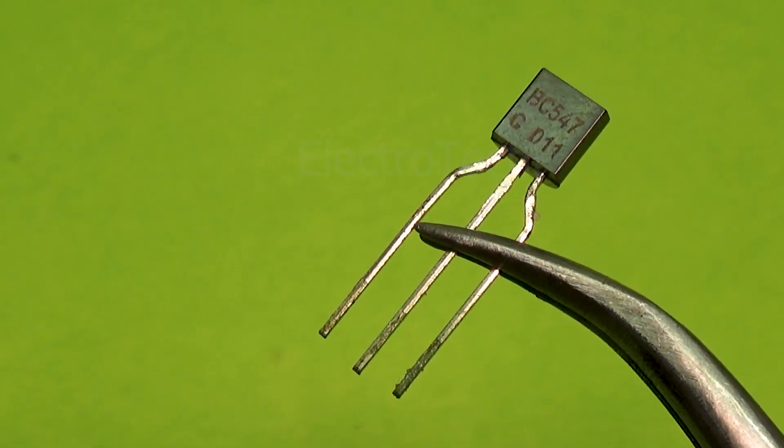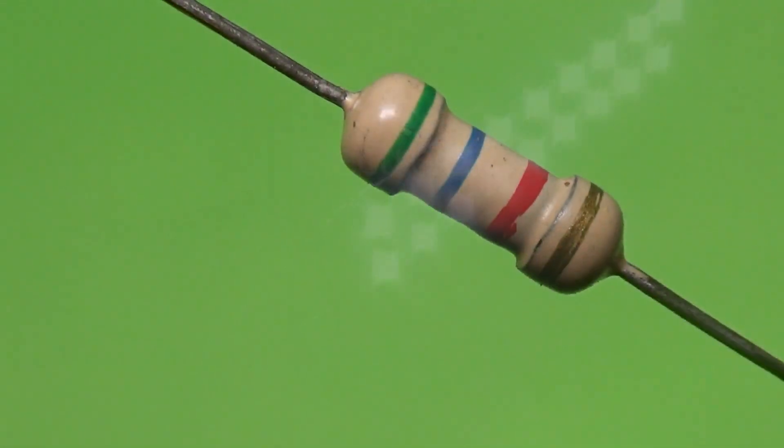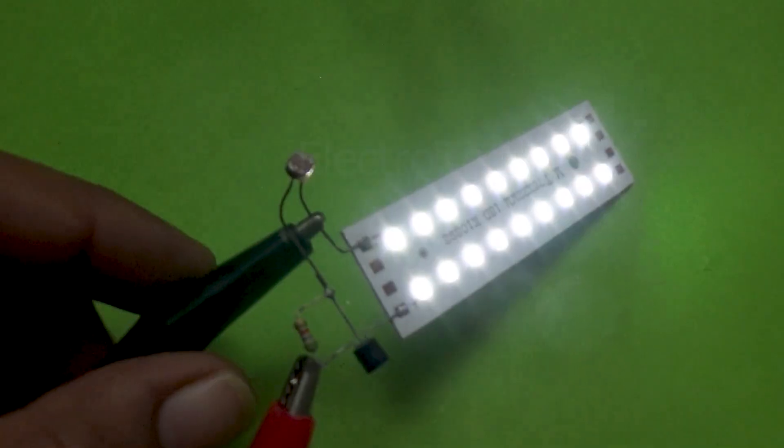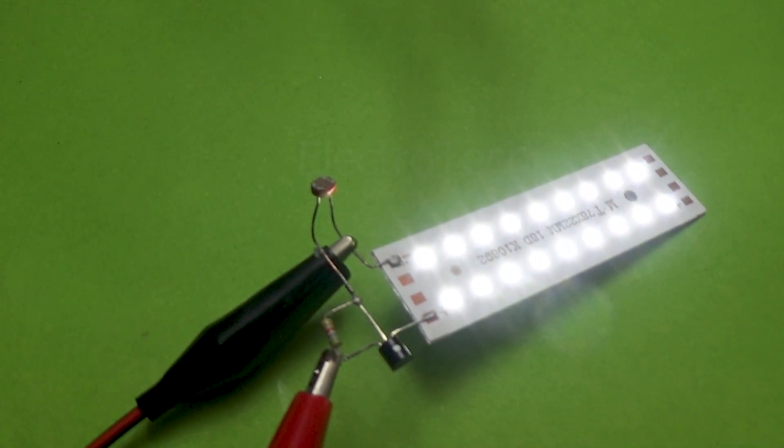A BC547 transistor, an LDR, and a 5.6 kilo-ohm resistor. Welcome to Electrotechy, where we learn electronics from basics to brilliance.